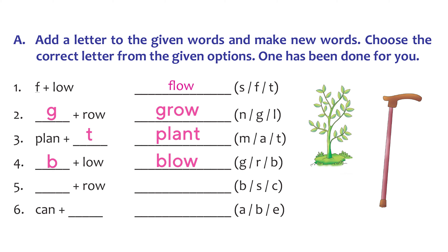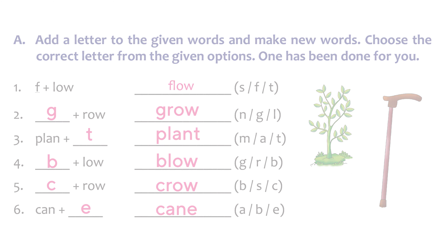The fifth one — we have the word 'row'. Let's try adding C in front of it and we get 'crow', like the bird crow. And the last one is 'can'. How about we try adding the letter E at the end of it? And we get the word 'cane', like a walking stick.